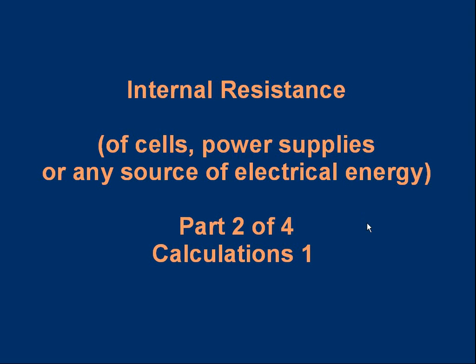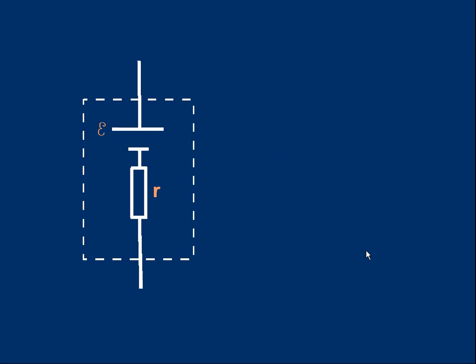Welcome to part two of the lesson on internal resistance. Parts two and three are about calculations for circuits containing internal resistance, so this is the first of the calculation parts. Let's go back to our basic cell with internal resistance: EMF E, internal resistance usually small r, and a dotted line represents the fact that this is a single unit, a single cell.